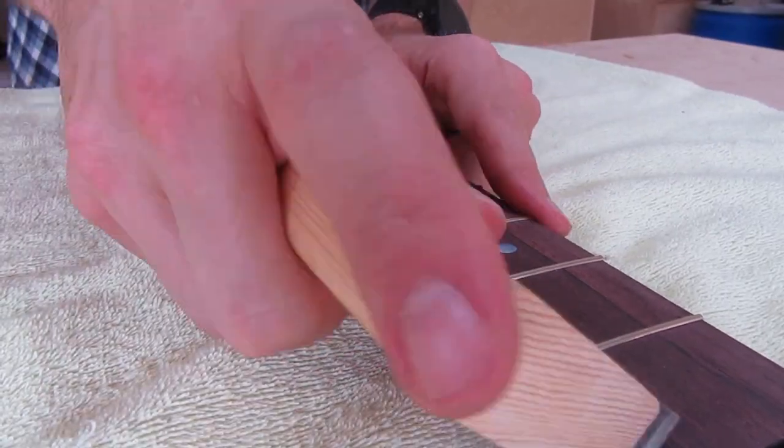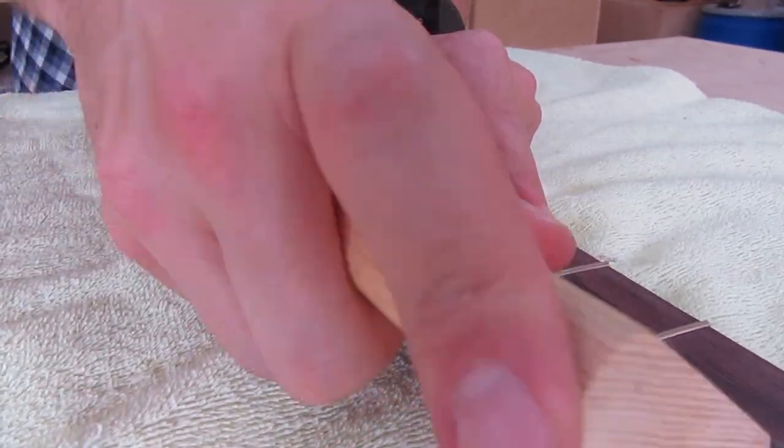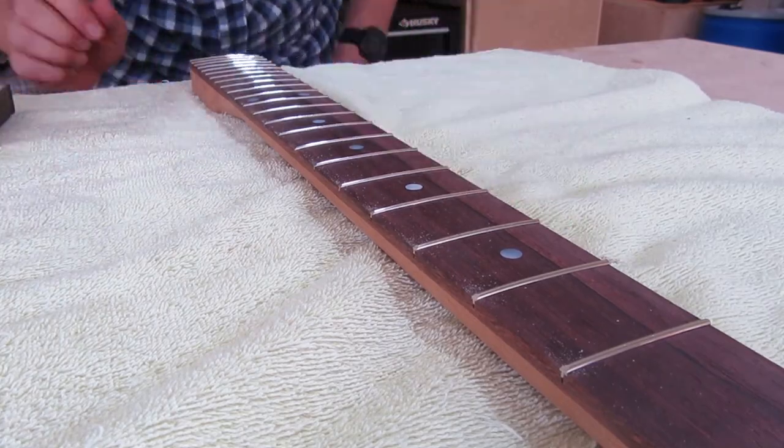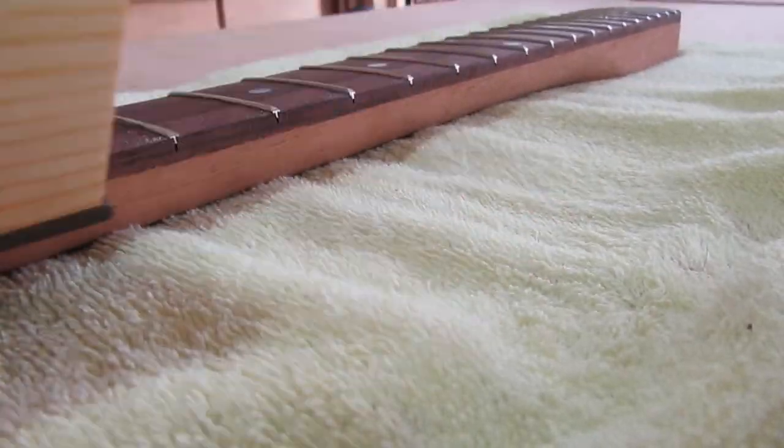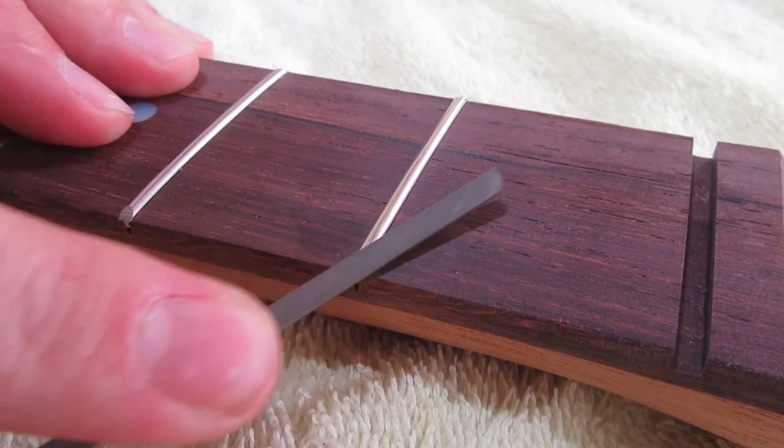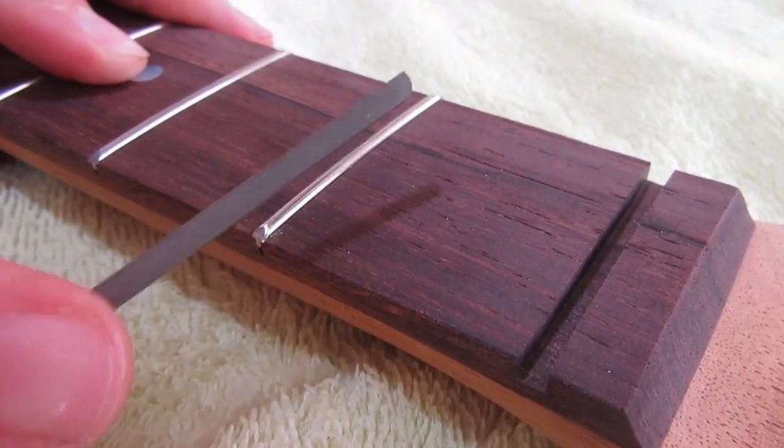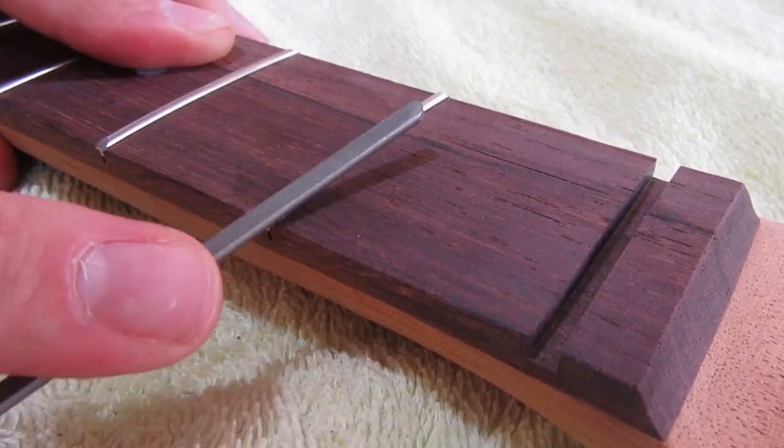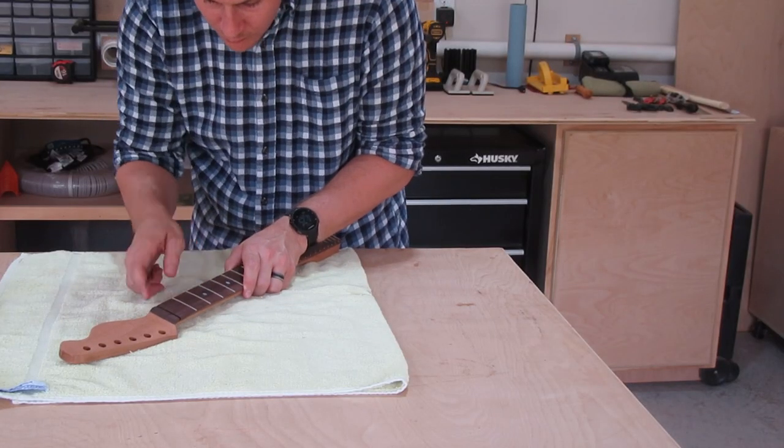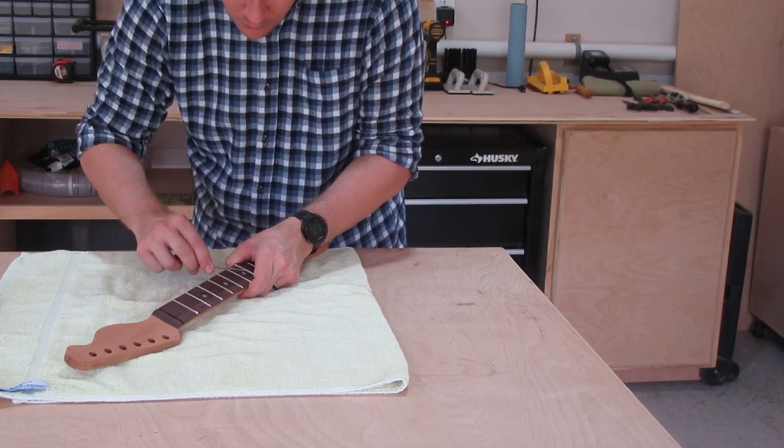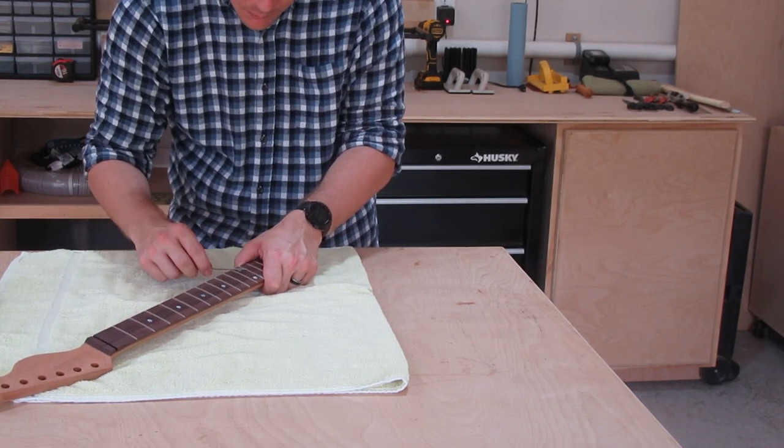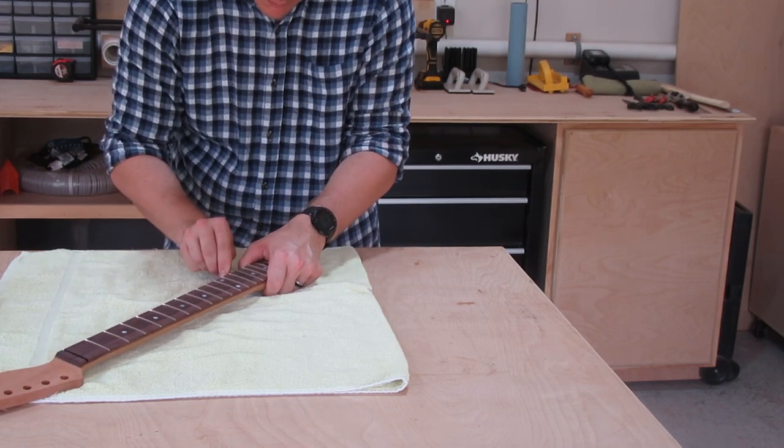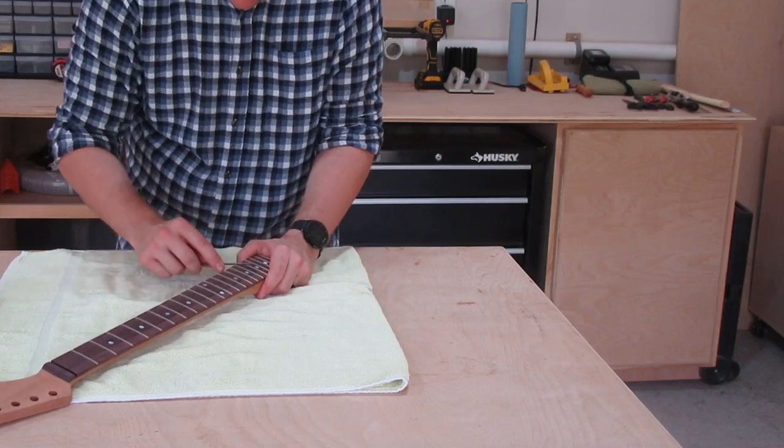And then here I'm applying approximately a 30 to 40 degree bevel on the fret ends and this is to add comfortability to the player when they're actually moving their hands up and down the neck. You don't want sharp right hand corners because you'll feel it on your fingers and actually cut you. So here I'm just using a rough file on a block that I made. The total fret job's probably a good two and a half to three hours for someone who's done it before. It's the piece of the guitar that will show out the most so you want to do a good job on this and take your time.